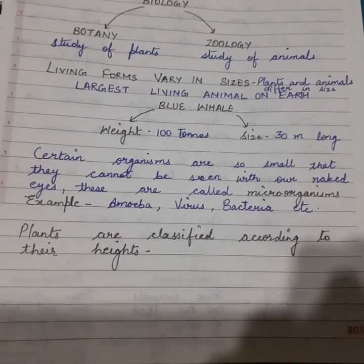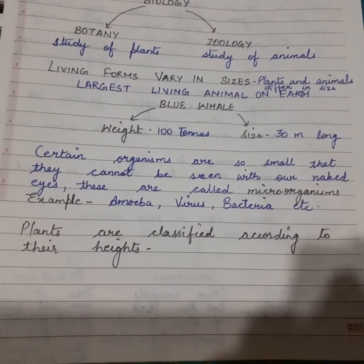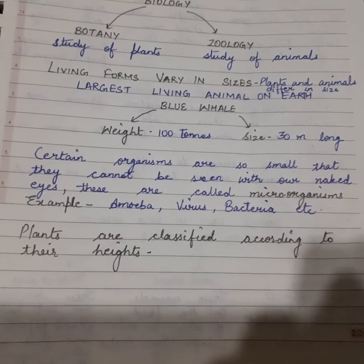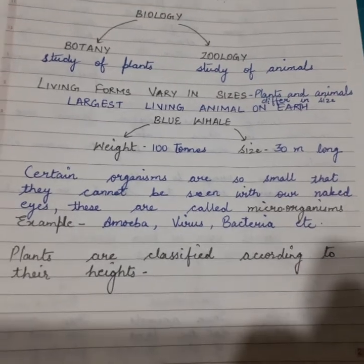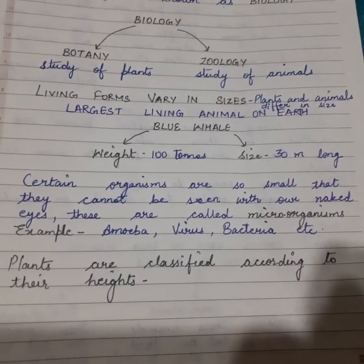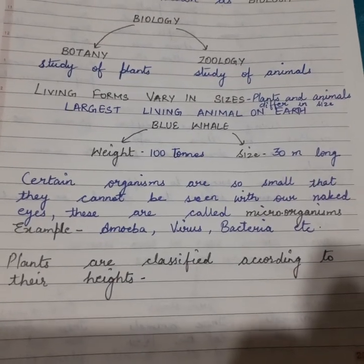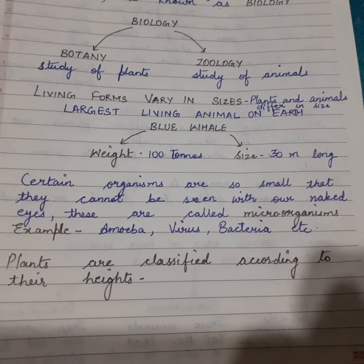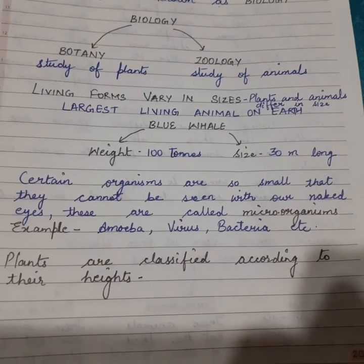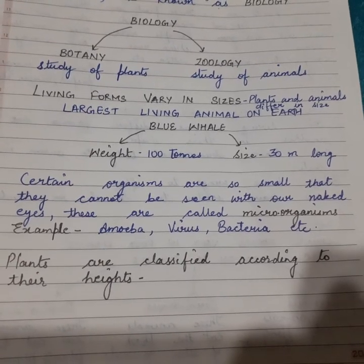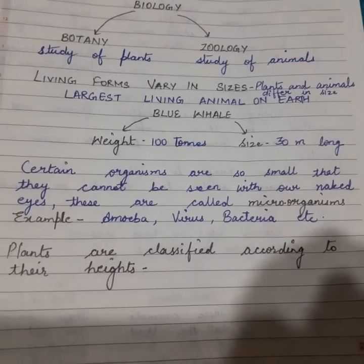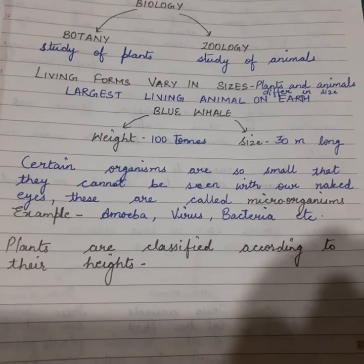Certain organisms are so small that they cannot be seen with our naked eyes. These are called microorganisms. Examples: amoeba, virus, bacteria, etc.